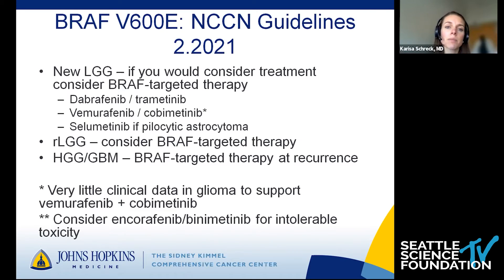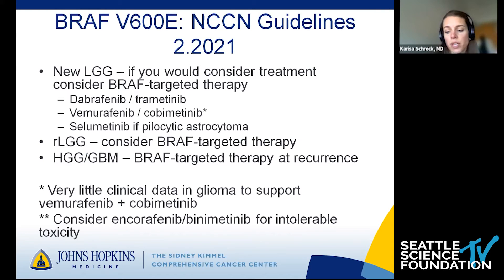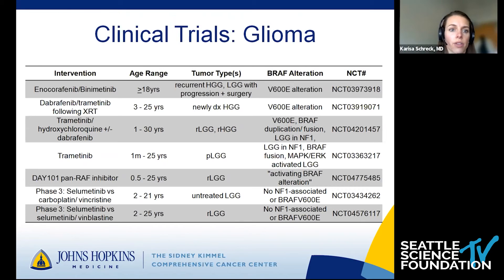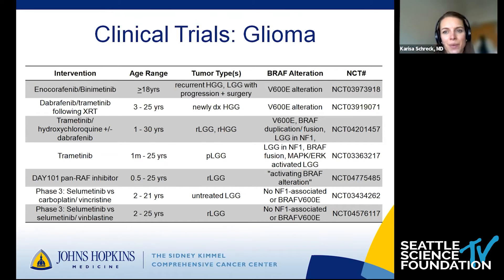Some combinations have a different toxicity profile, so you might consider Encorafenib and Binimetinib for intolerable toxicity. If your patient falls outside of this strict definition, there are a lot of clinical trials right now. I'm happy to share these slides with anyone who would like them as a reference. Studies are looking at a lot of different combinations, and almost all of these studies are in pediatric glioma.